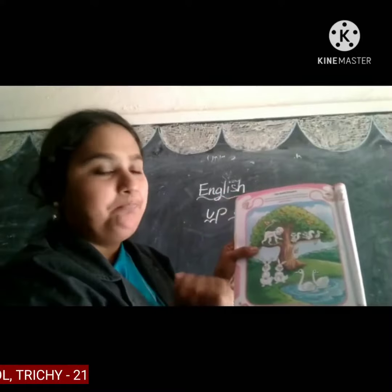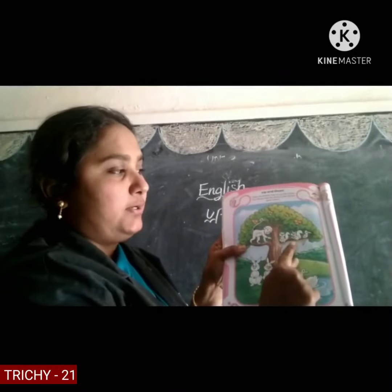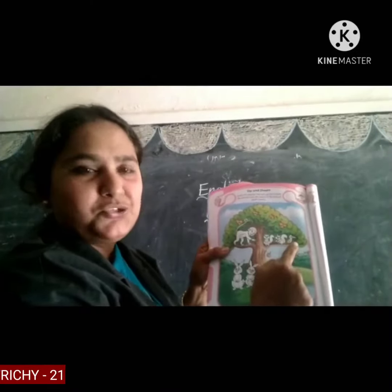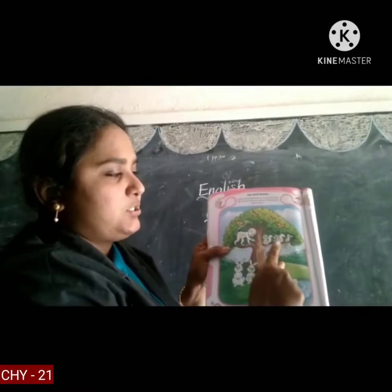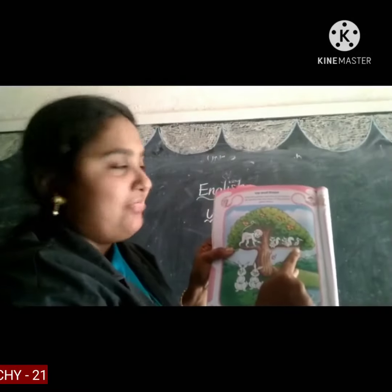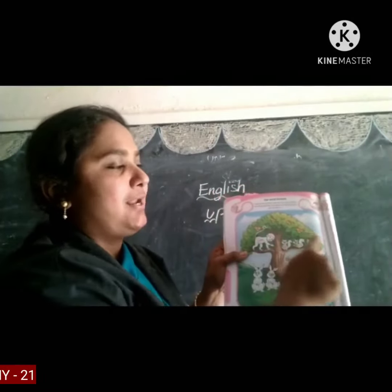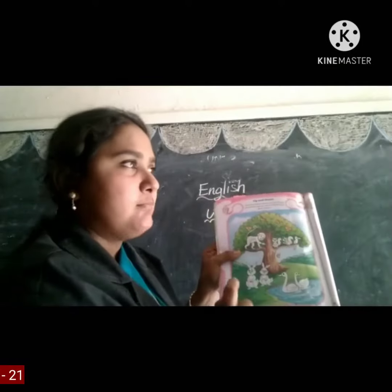In this, which animal is up? The monkey and the squirrel, and also the bird. So monkey, squirrel, and the bird — what do you have to do? You have to circle them. What do you have to do? Circle the animal.